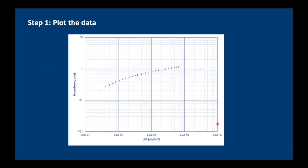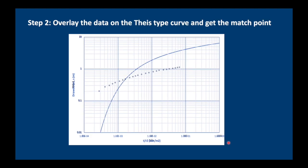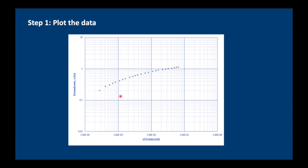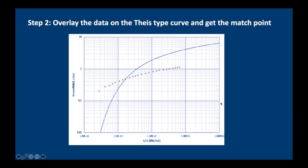The first thing which we need to do is plot our data. The drawdown is always plotted on the y-axis increasing upwards and t over r squared is plotted on the x-axis. And what we do then is that we overlay our data onto our Theis curve and get the match point. Of course that means that our data has to be plotted on transparent paper. Now I'm going to try to illustrate this using modern technology.